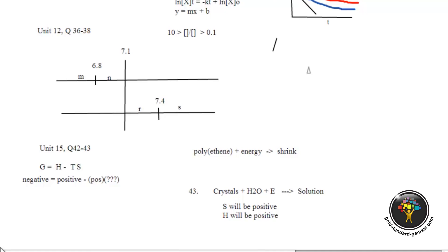So before they were organized crystals, now they're not. So entropy increased. H will be positive because it's an endothermic reaction, just like we just saw.